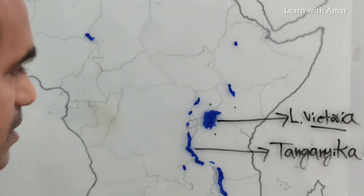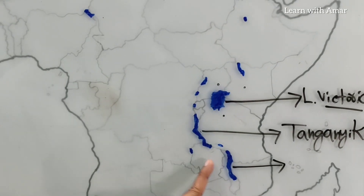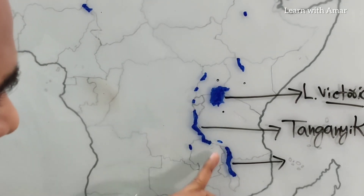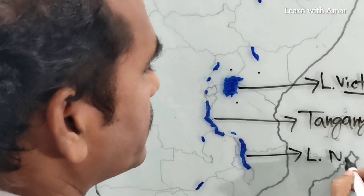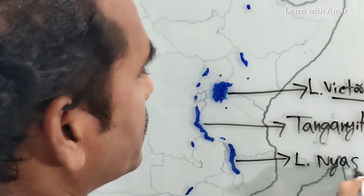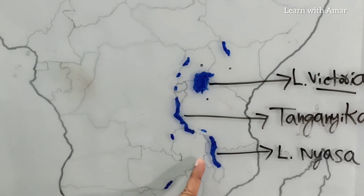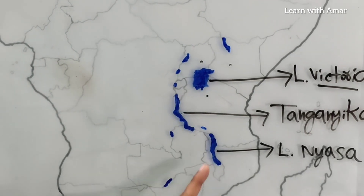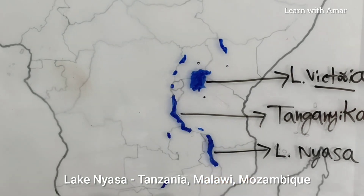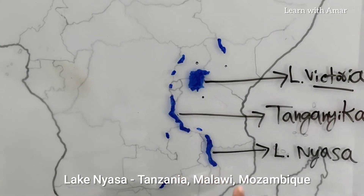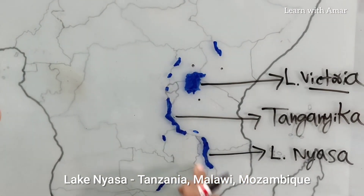Now, this lake is named after the country Malawi. Earlier it was known as Lake Malawi. Now it is known as Lake Nyasa. The old name was Lake Malawi. How many countries does this lake cover? It is Tanzania, Malawi, and Mozambique — three countries.